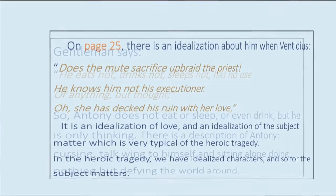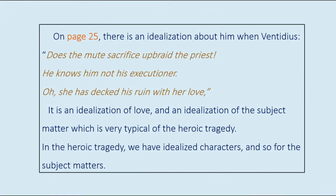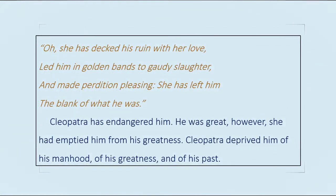On page 25, there is an idealization about him. Ventidius says: 'Does the mute sacrifice upbraid the priest? He knows not his executioner. Oh, she has decked his ruin with her love.' It is an idealization of love, and an idealization of the subject matter, which is very typical of the heroic tragedy. In the heroic tragedy we have idealized characters and so too the subject matters. 'Oh, she has decked his ruin with her love, led him in golden bands to gaudy slaughter, and made perdition pleasing.'